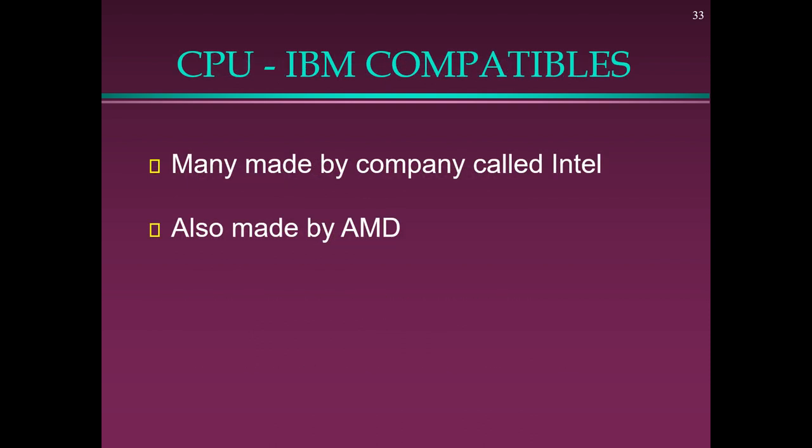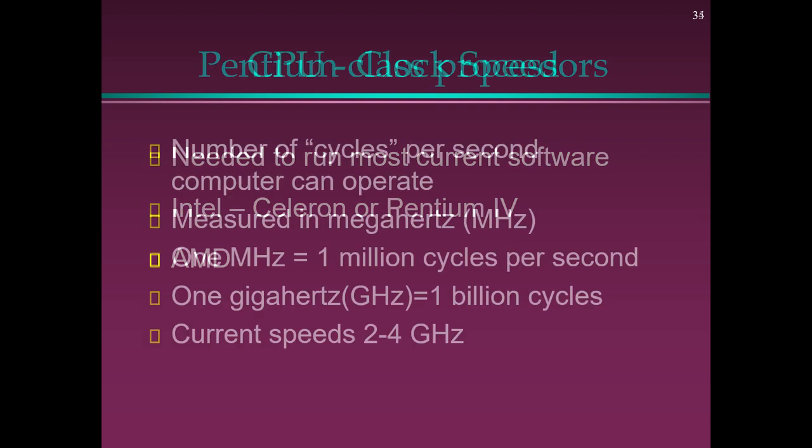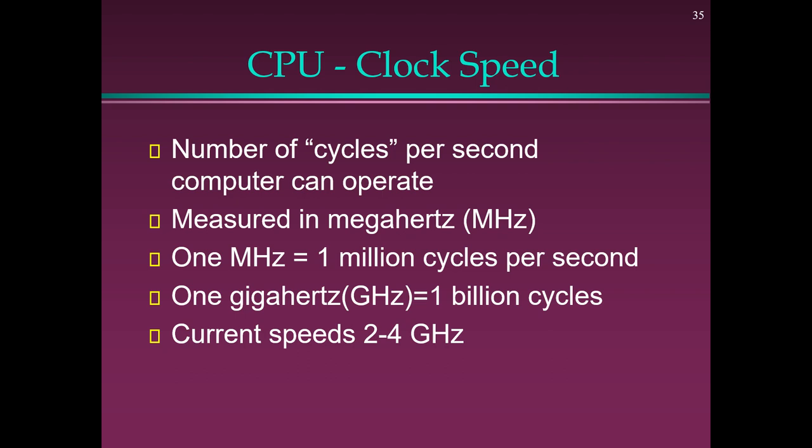Central Processing Unit (CPU): Also called the processor or microprocessor, it is the brain of the computer and performs all computer operations. IBM compatibles are made by Intel and also by AMD. Pentium class processors are needed to run most current software — Intel Celeron or Pentium 4, and AMD. CPU clock speed is the number of cycles per second — measured in MHz. 1 MHz equals 1 million cycles per second; 1 GHz equals 1 billion cycles. Current speeds are 2–4 GHz.